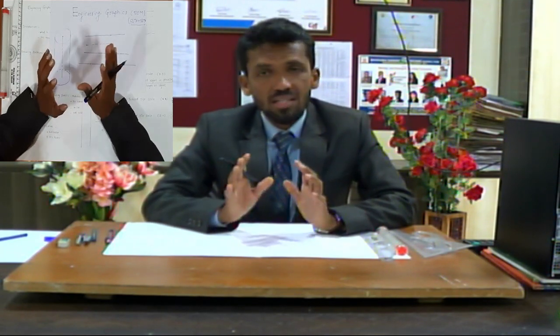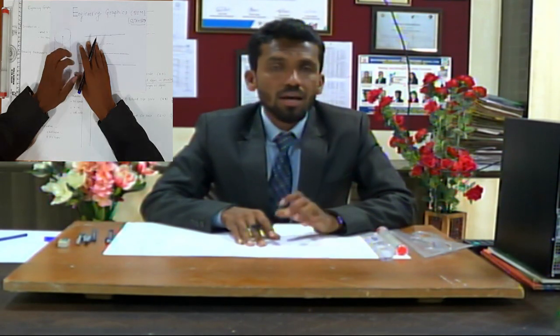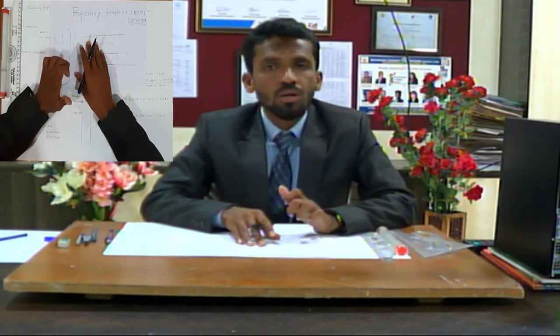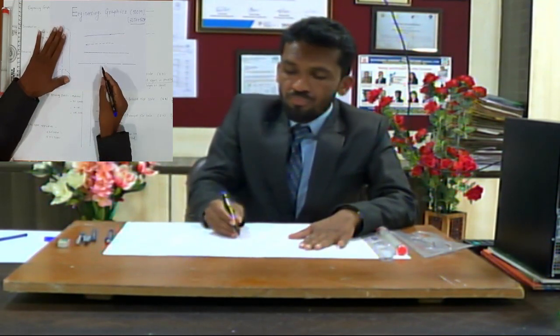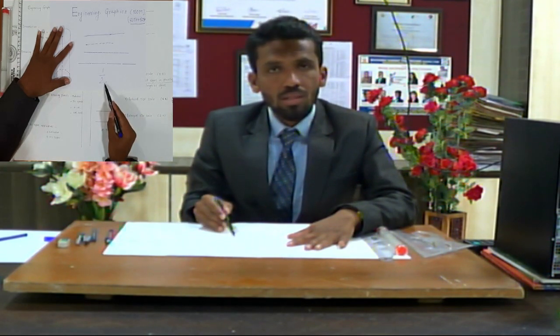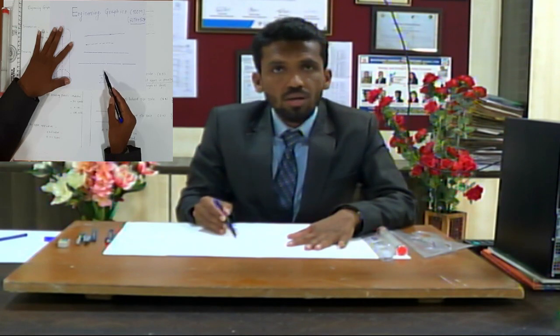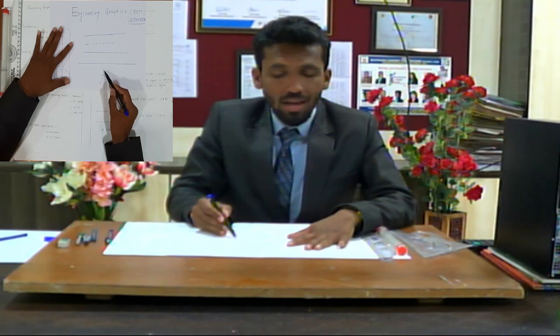When the scale is 1 to 1, that is a full scale. The second type is reduction scale. For example, reduction scale means the actual object is larger than what is drawn. In reduction scale 1 by 2: the number 2 means the actual dimension of the object, and 1 means the dimension in the drawing. Drawing is 1 and actual is 2.